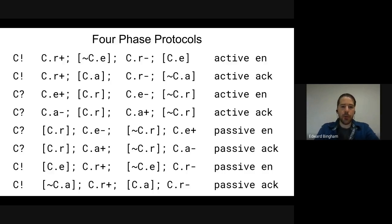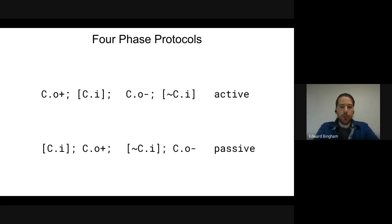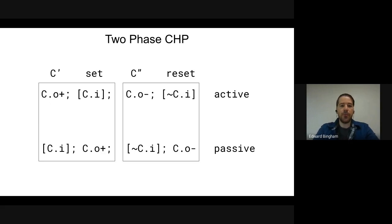When we abstract all this away and just look at input and output rails, we end up with really only one protocol: the active port raises the output rail, the passive port responds, the active port lowers its output rail, and the passive port responds. We can take this four-phase protocol and divide it into two sections — the set phase C' on the left and the reset phase C'' on the right. The set phase and reset phase are mirrors of each other: where we raise the request in the set phase, we lower it in the reset phase.